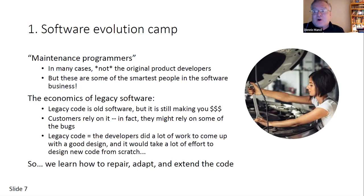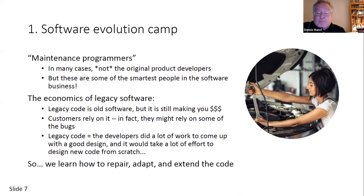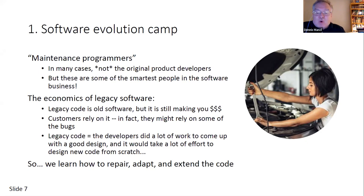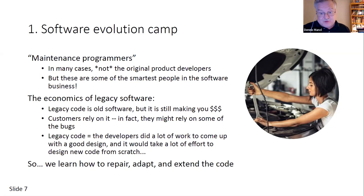The software evolution camp is home turf for folks we call maintenance programmers — some of my favorite people, because they're really smart. They open up the hood of existing code and know the best ways to go in and fix and extend it. Legacy code — old code that somebody wrote and now they're gone — is not a dirty word to them, because legacy code is code that still makes money for the company. It would take an enormous amount of effort to build a new system with all of the expertise that went into building it. So repairing and extending code is definitely something worth the effort.